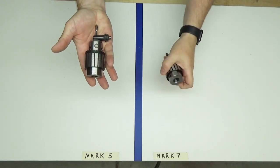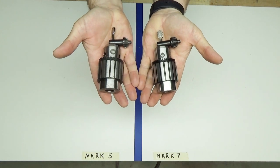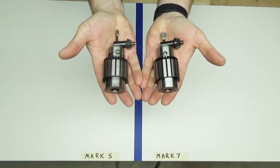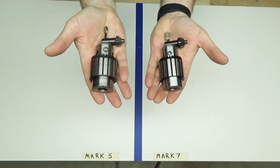This is my ShopSmith Mark V drill chuck. This is the Mark VII drill chuck. They seem to be identical in every way other than the fact that this one is older and shows a little wear.